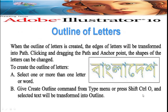Outline of letters: when the outline of a letter is created, the edge of the letter will be transformed into a path. By clicking and dragging the path anchor points, the shapes of the letters can be changed. To create an outline of a letter, follow two steps: select one or more letters or words, then give the Create Outline command from the Type menu, or press Shift+Ctrl+O. The selected text will be transformed into an outline.